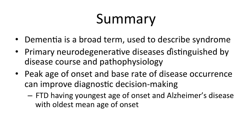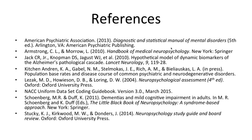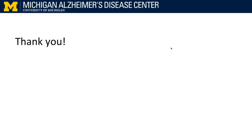To close, dementia is a broad term used to describe a syndrome. The primary neurodegenerative diseases are distinguished by various differences in disease course and pathophysiology. Peak age of onset and base rate of disease occurrence can improve diagnostic decision-making — for example, FTD having the youngest age of onset and Alzheimer's disease with the oldest mean age of onset. Thank you very much.